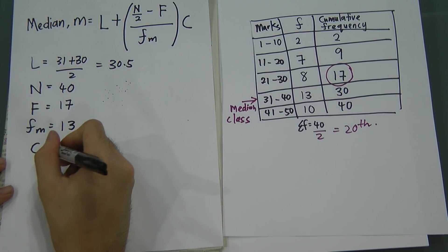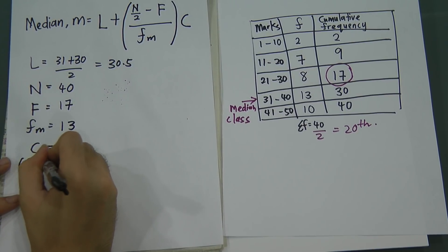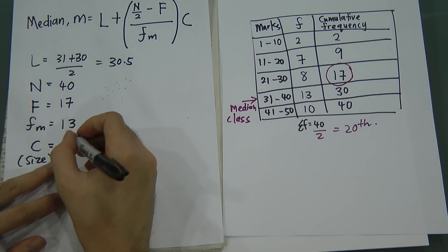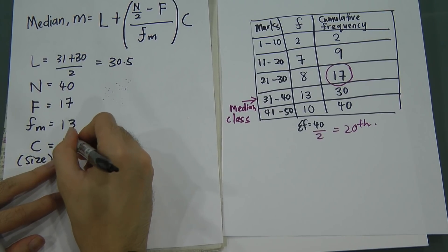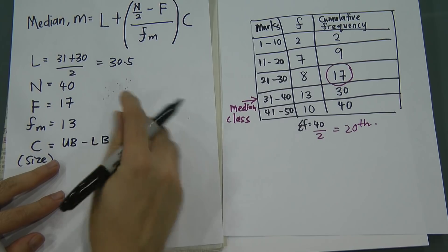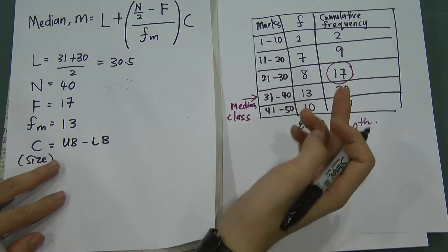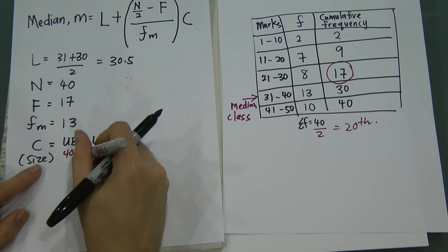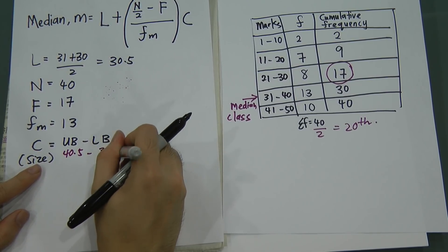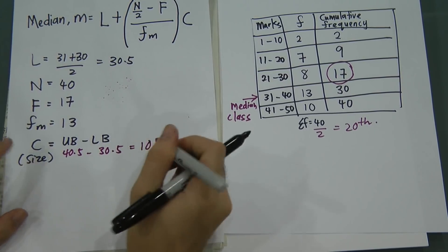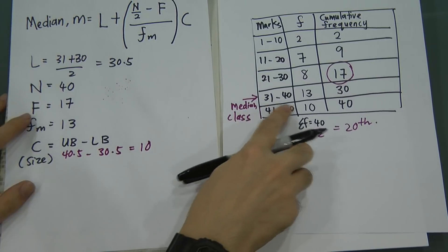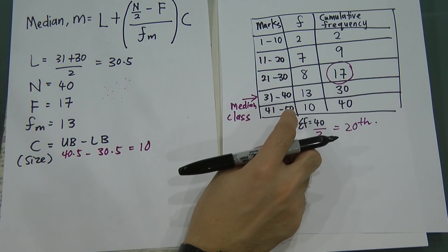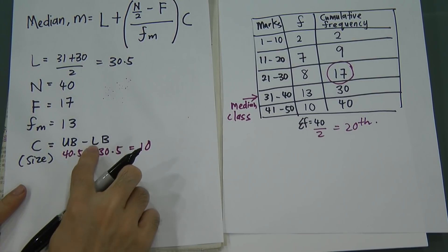What is C? C is the class size — that means how big your class is. How do you find the class size? You use upper boundary minus lower boundary. Taking the median class: upper boundary is 40.5 minus lower boundary 30.5, so you get 10. The class size is 10. Be careful — some students use 40 minus 31 and get 9, which is wrong. Remember: use upper boundary minus lower boundary to get the class size of 10.